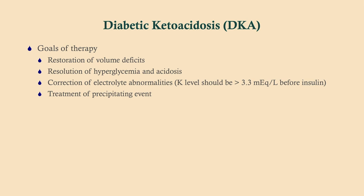The goals of therapy are multifold. First, we want to restore the volume deficits — these patients tend to be four to six liters deficient in fluid, so we need to vigorously replenish. We want to resolve the hyperglycemia and acidosis, correct any electrolyte abnormalities, and treat the precipitating event. These patients tend to be hyperkalemic despite having an overall deficit of potassium in their body — we'll need to address that. We also want to identify and treat whatever triggered the episode.